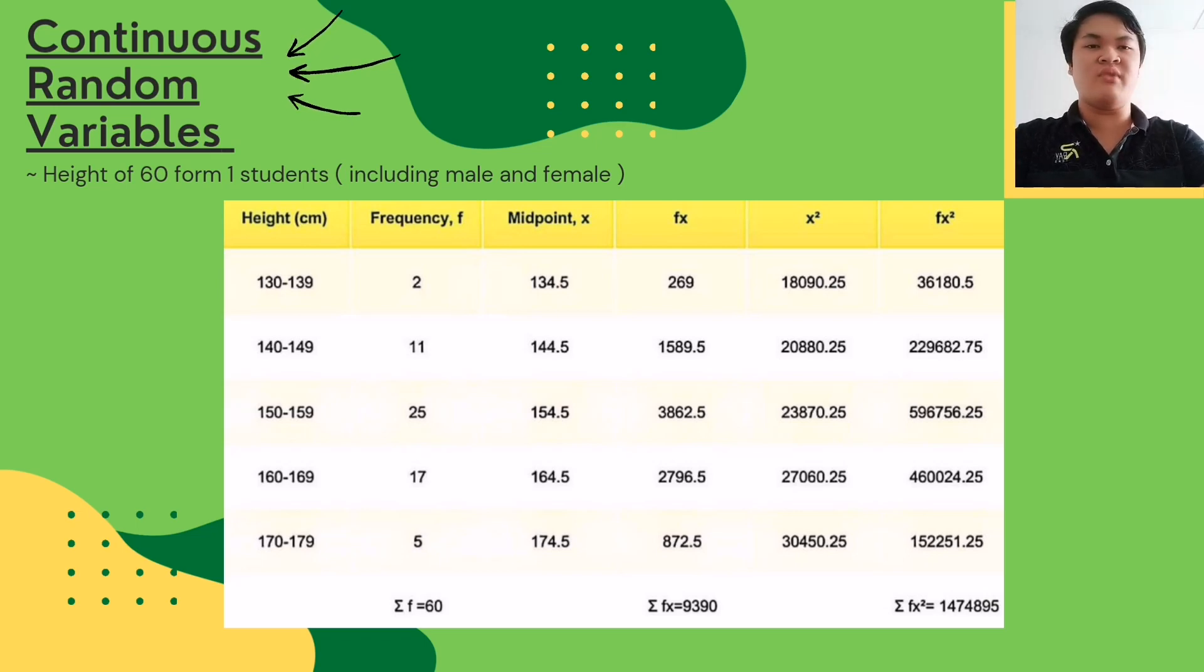As you can see in the table, we sorted the data to calculate the mean, which was 156.46, and the standard deviation, which was 10.092.